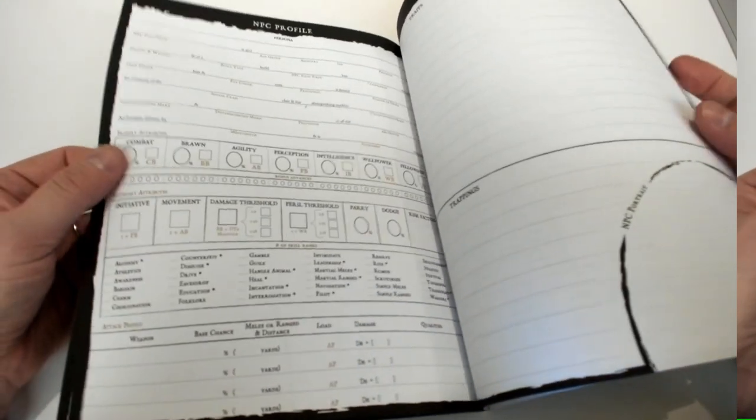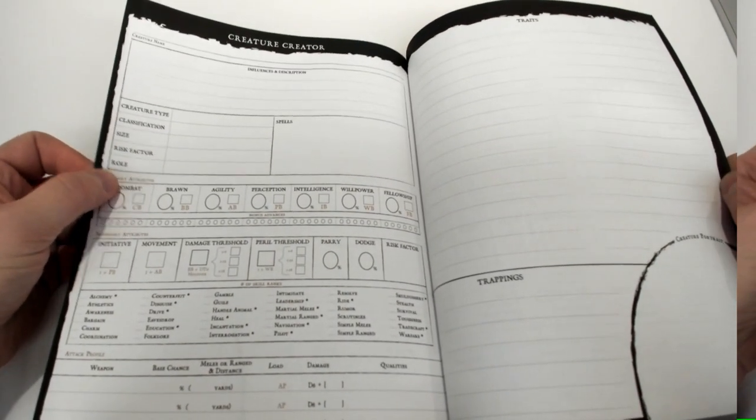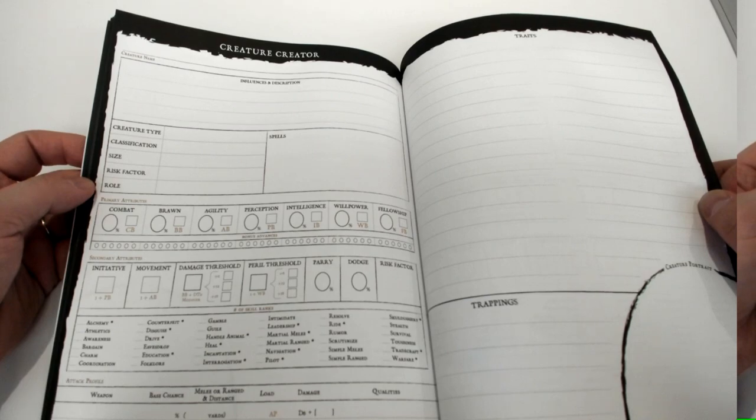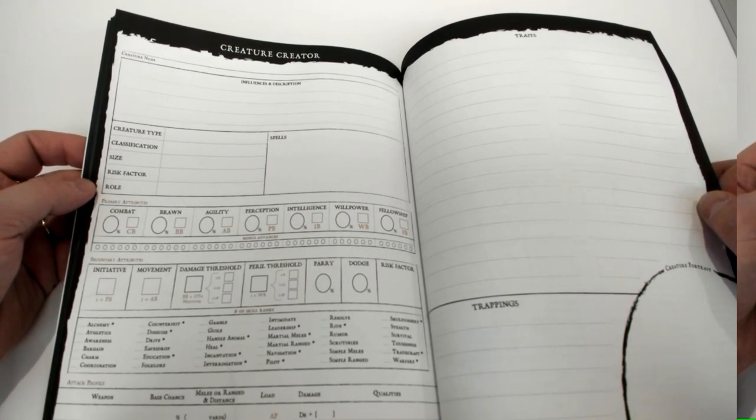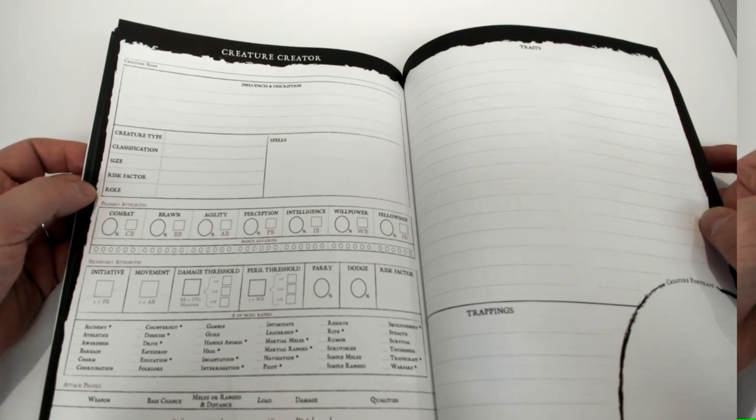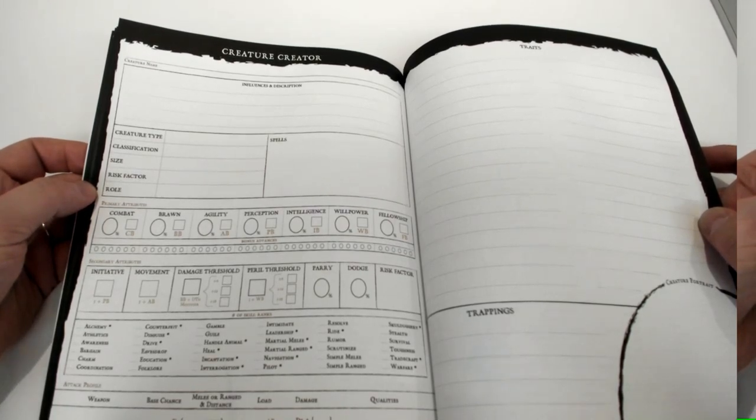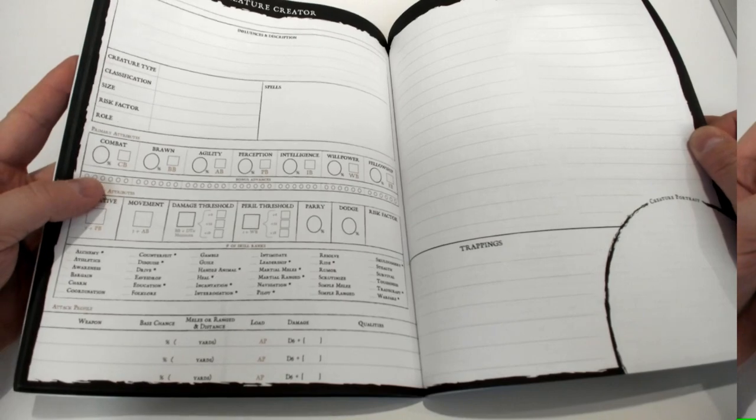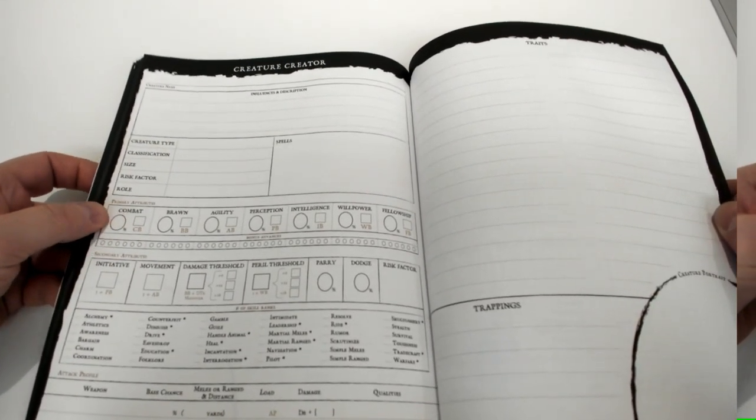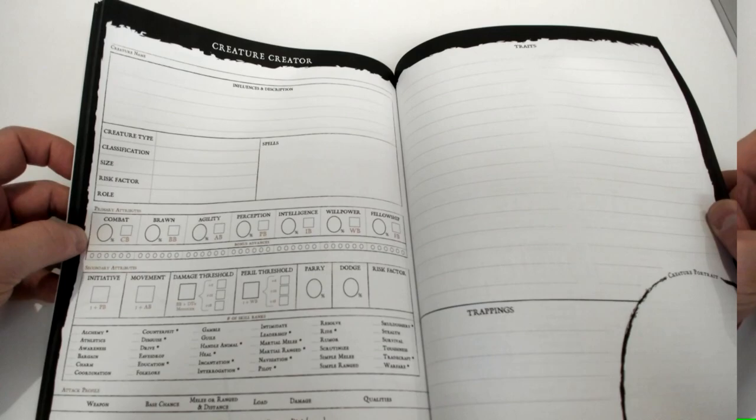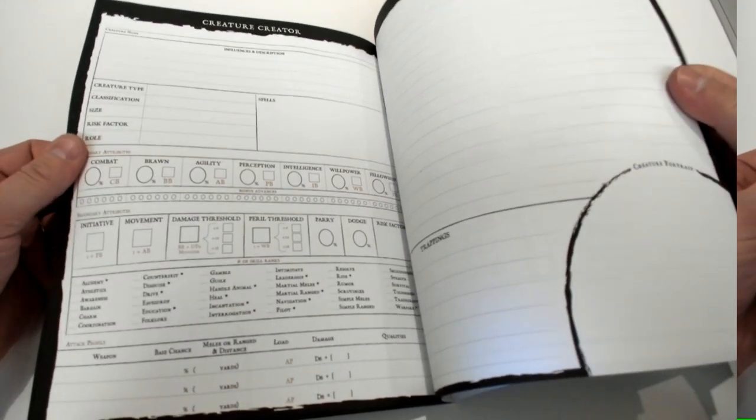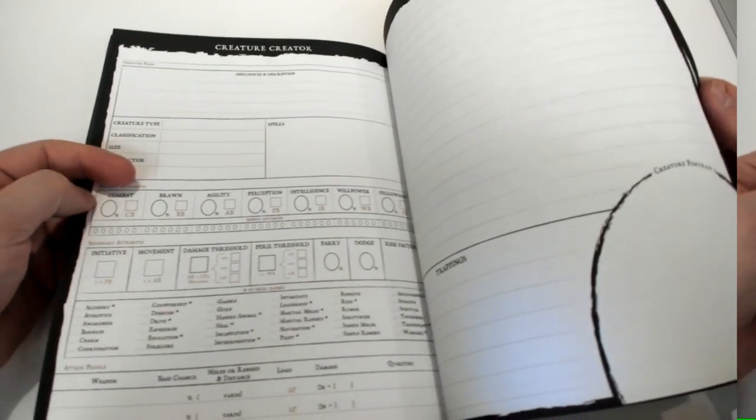Then we move on to our creature creator. So as you already know, or in case you don't know, we introduced the idea of here's how you can create your own custom creatures. We didn't want to release a new bestiary - we thought instead we would give game masters the tools to create their own stuff, and that's what this serves. This is a sheet for you to plug in everything as you create your own custom creatures. Like the NPC creator sheet, this has all the necessary fields for you to use. Of course this is all high quality paper - there's no bleed through in the pages, it's super nice.